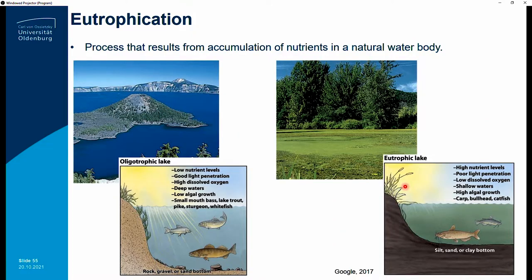Some processes result from accumulation of nutrients in natural water bodies. An oligotrophic lake would have low nutrient levels and good light penetration — you measure that with turbidity or Secchi disc depth. If your Secchi disc depth is decreasing over time, it means more material is entering the water. You also measure dissolved oxygen — in an oligotrophic lake you'd have a high concentration — and if you measure algae you'd find a very low concentration.